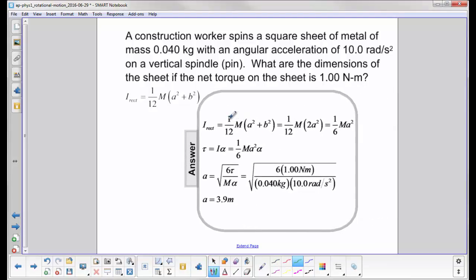So here we have the moment of inertia of a rectangle: 1/12 m(a² + b²). Since it's a square, a equals b, so a² + b² is now 2a². Then we divide through and we get the moment of inertia of this sheet is 1/6 ma².